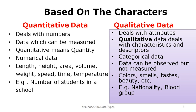Quantitative data is also known as numerical data because we express it in numbers and figures. Examples include length, height, area, volume, weight, speed, time, temperature, the number of students in a class, or the number of patients in an outpatient department. All of these come under quantitative data — those which can be expressed in terms of numbers.